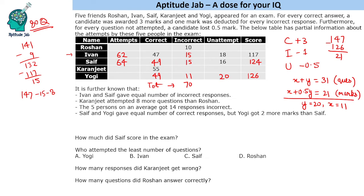Yogi attempted 49 plus 11 = 60 questions. Now the remaining unused statement is: Karanjeet attempted 8 more questions than Roshan. Using the total incorrect sum of 70 — with 30, 40, 51 already accounted — Karanjeet gave 19 incorrect responses, with 74 attempts and 6 unattempted.